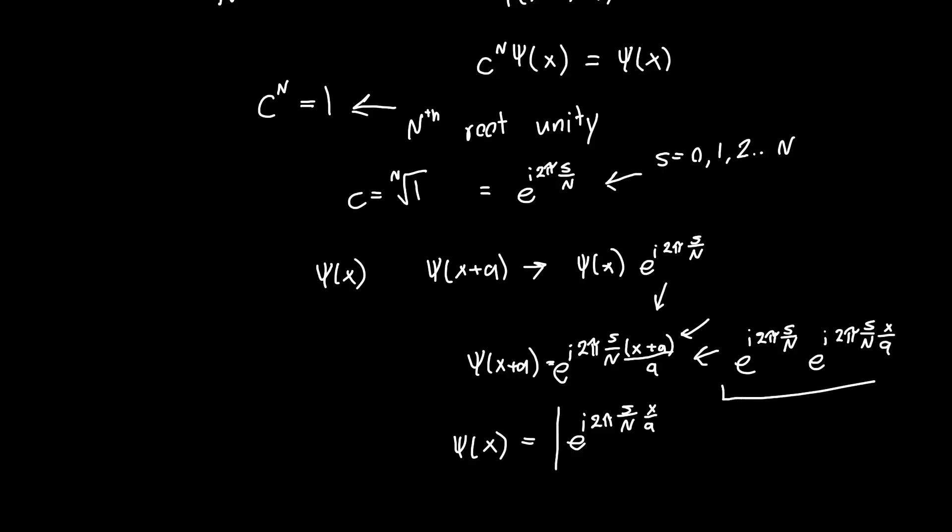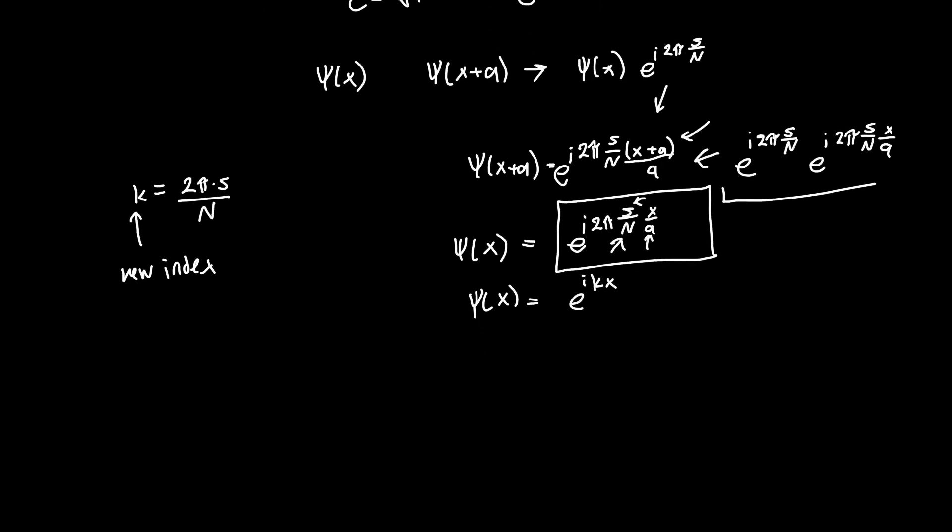But it's kind of bothersome and it's kind of ugly because we don't know n, s can be any integer we want. The only thing we really know in here is a two pi and x. So we're just going to make the substitution, k is equal to two pi times s over n a. And so this is just our new index and this makes this a lot prettier. So psi of x is now equal to e to the i k x over a.